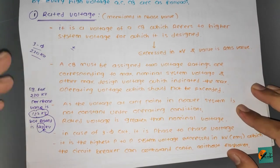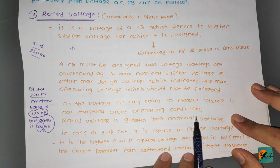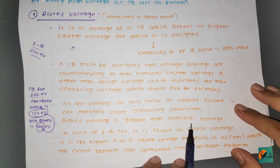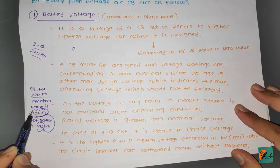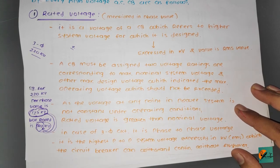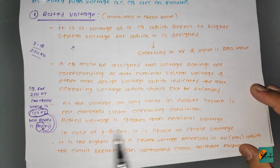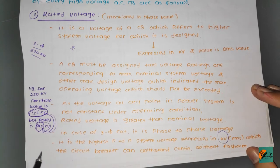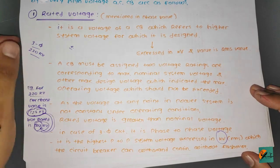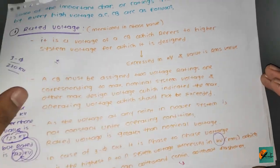Since the voltage at any point in a power system is not constant under operating conditions, the rated voltage is greater than the nominal voltage. In the case of a three-phase circuit, it is the phase-to-phase voltage — the highest phase-to-phase system voltage expressed in RMS kilovolts that the circuit breaker can withstand continuously without flashover or any failure.